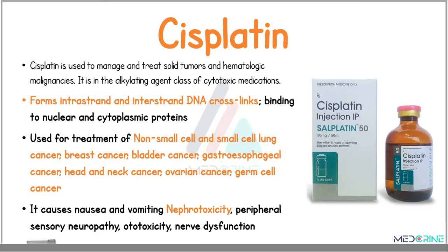Lastly, we have cisplatin. Cisplatin is used to manage and treat solid tumors and hematologic cancers, and belongs to the alkylating agent class of cytotoxic medications. It works by the formation of intrastrand and interstrand DNA cross-links, binding to nuclear and cytoplasmic proteins. Cisplatin is used in the treatment of non-small cell and small cell lung cancers, breast cancers, bladder cancers, gastroesophageal cancers, head and neck tumors, ovarian cancers, and germ cell cancers. Side effects include nausea and vomiting, nephrotoxicity, peripheral sensory neuropathy, ototoxicity, and nerve dysfunction.